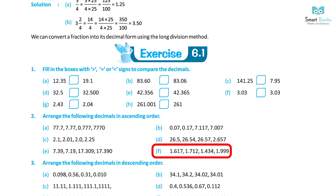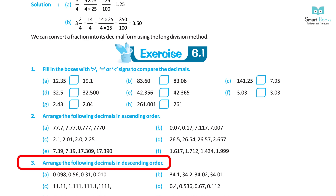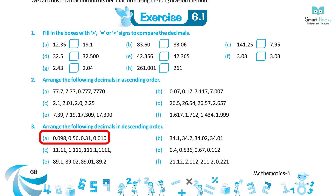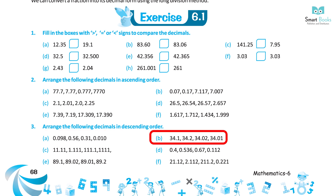Question 3: Arrange the following decimals in descending order. A. 0.098, 0.56, 0.31, 0.010 — Solution: 0.56, 0.31, 0.098, 0.010. B. 34.1, 34.2, 34.02, 34.01 — Solution: 34.2, 34.1, 34.02, 34.01. C. 11.11, 1.11, 100.11, 31.11 — Solution: 100.11, 31.11, 11.11, 1.11.